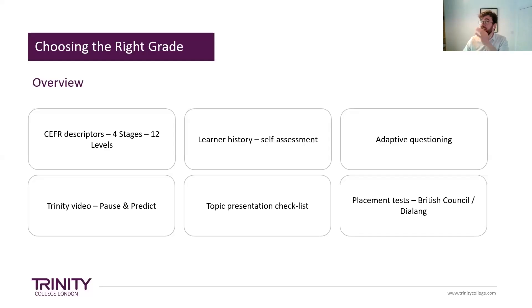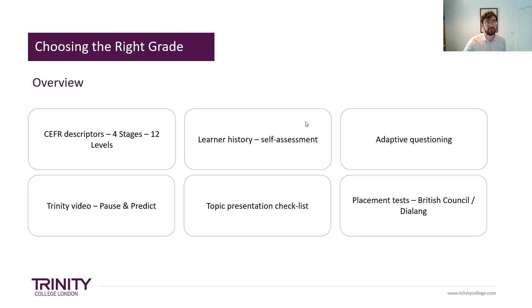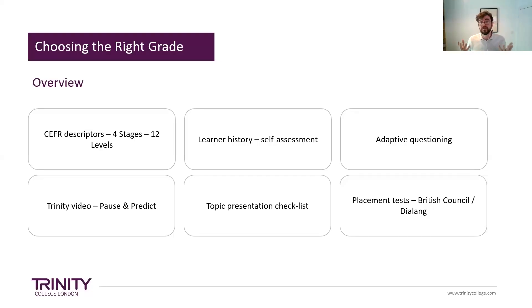Then it's a case of thinking: can my students do this? They don't have to be perfect, but are they roughly in that area? Then maybe that's the exam I will enter them for, and I will share the requirements with the candidate so they can work towards that. You can use the CEFR descriptors. Ask the learners themselves — what level do they think they are? Maybe they're already using an app, reading a certain book, attending a private class, or have done an exam before. Adaptive questioning is another method, and also use the videos. Online placement tests such as the British Council or Dialang from the University of Lancaster are also useful.